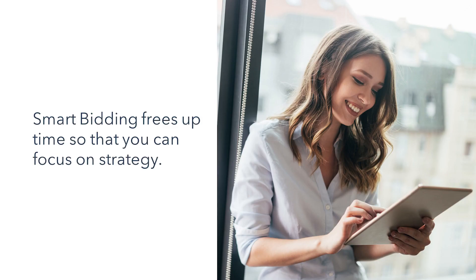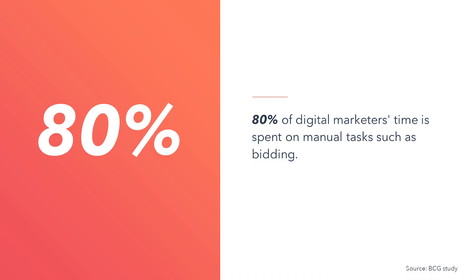Google's smart bidding solutions were created to help you tackle this challenge. These solutions aim to set the right bid for each and every auction, while taking into account your marketing objectives. Smart bidding frees up time so you can focus on strategy. Cross-referencing audience data with context to establish intent and set the right bid is a complex and time-consuming task. A BCG study recently showed that 80% of digital marketers' time is spent on manual tasks such as bidding, while only 20% is spent on strategy.